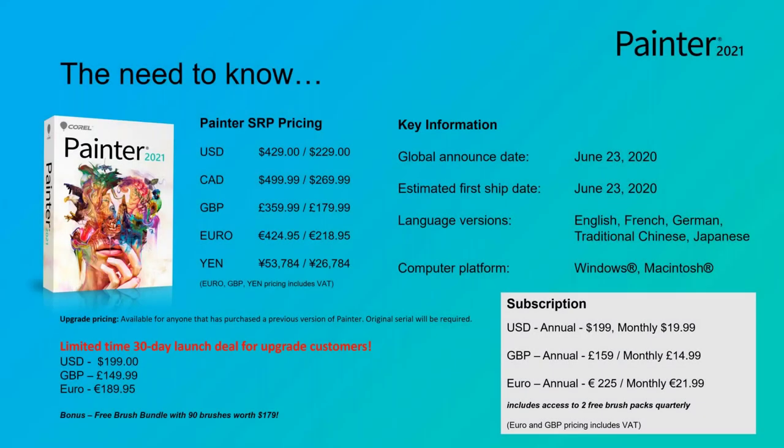To kick things off, I'd just like to quickly review all of the options that we have for you to purchase. We offer two different plans this time around. You can buy a perpetual license — you can do a full or upgrade. For our loyal customers, this is good for 30 days: it's $1.99 to upgrade, and then you get a free brush bundle that has 90 brushes worth $179. So that's the option that you've always had.